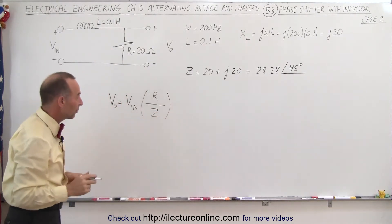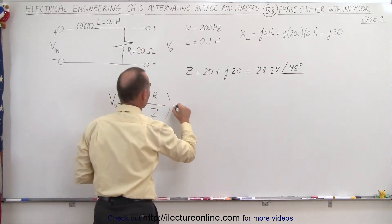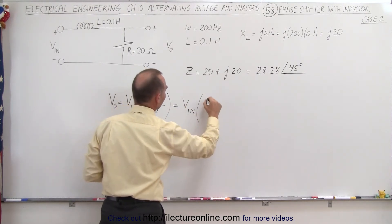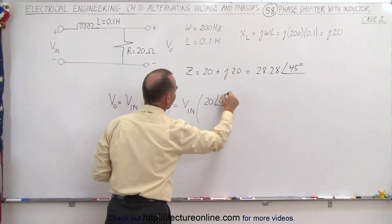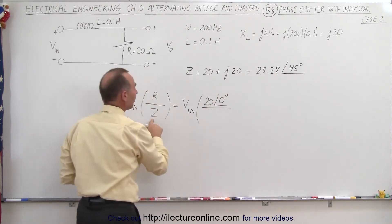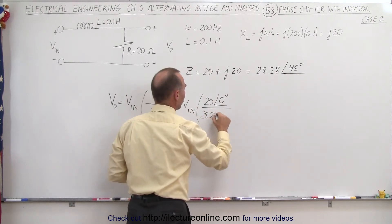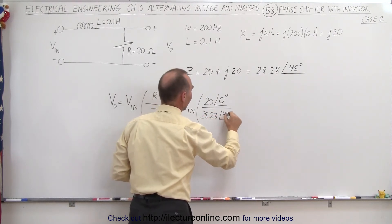See now what happens when we do this calculation. This would be equal to the input voltage times the resistance, which would be 20 with a phase angle of 0 degrees, divided by Z. Z, of course, can be written as 28.28 with a phase angle of 45 degrees.